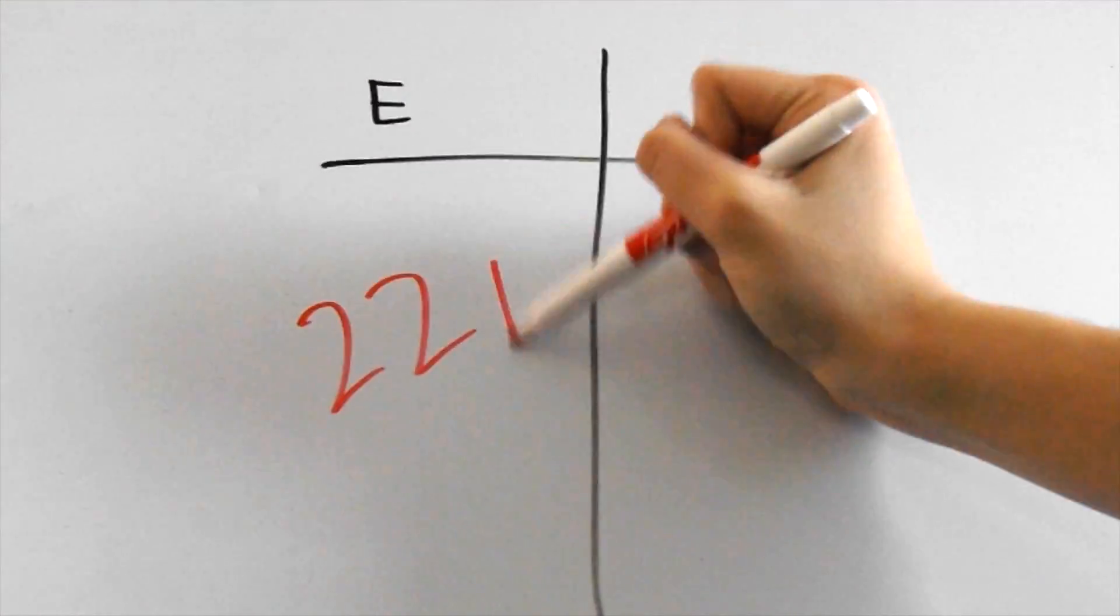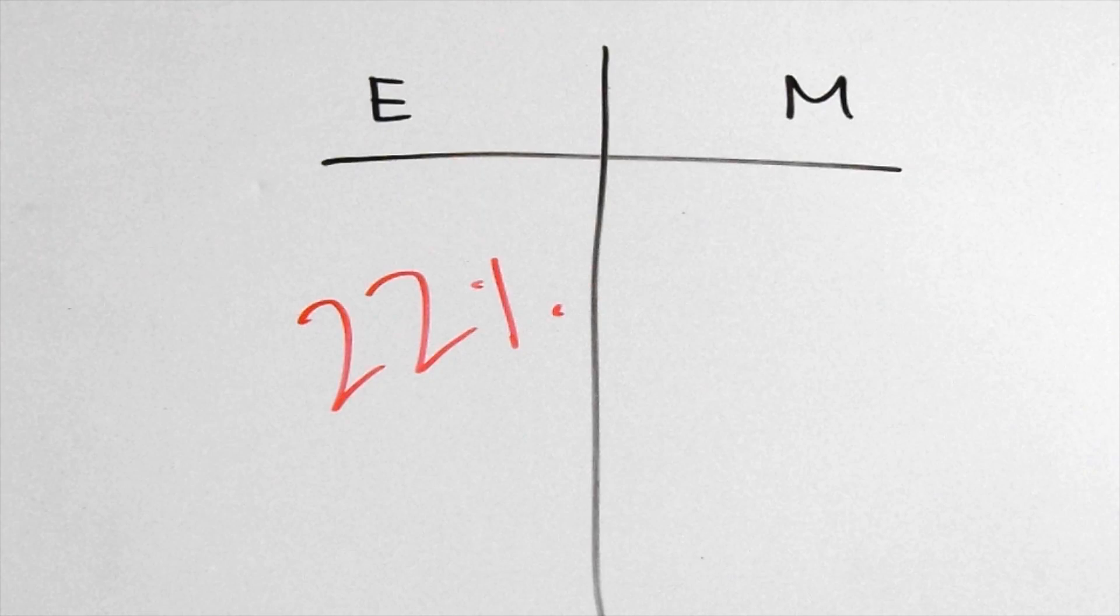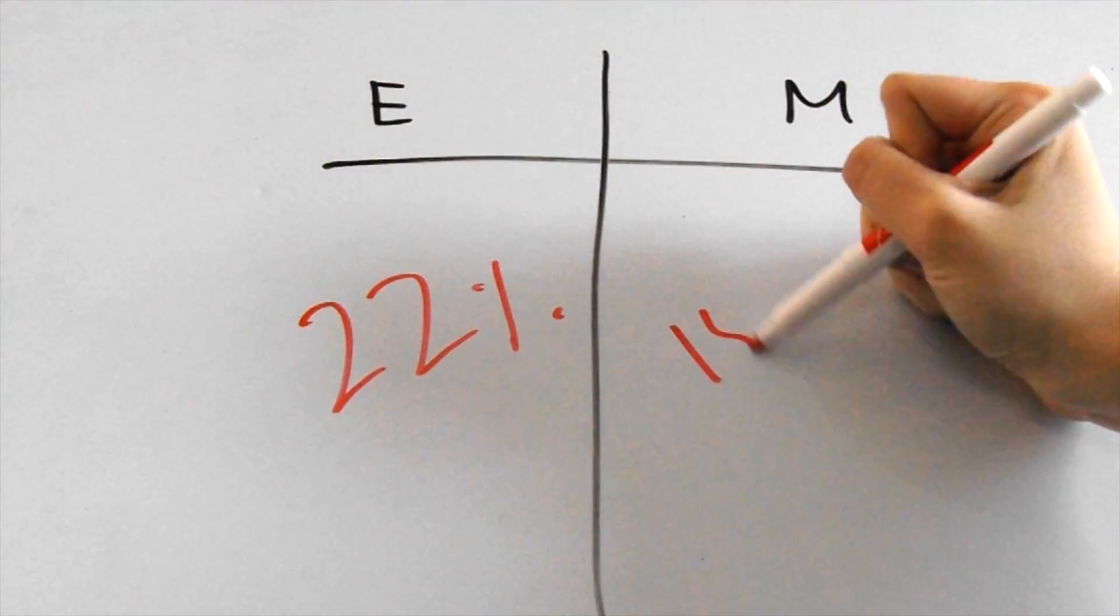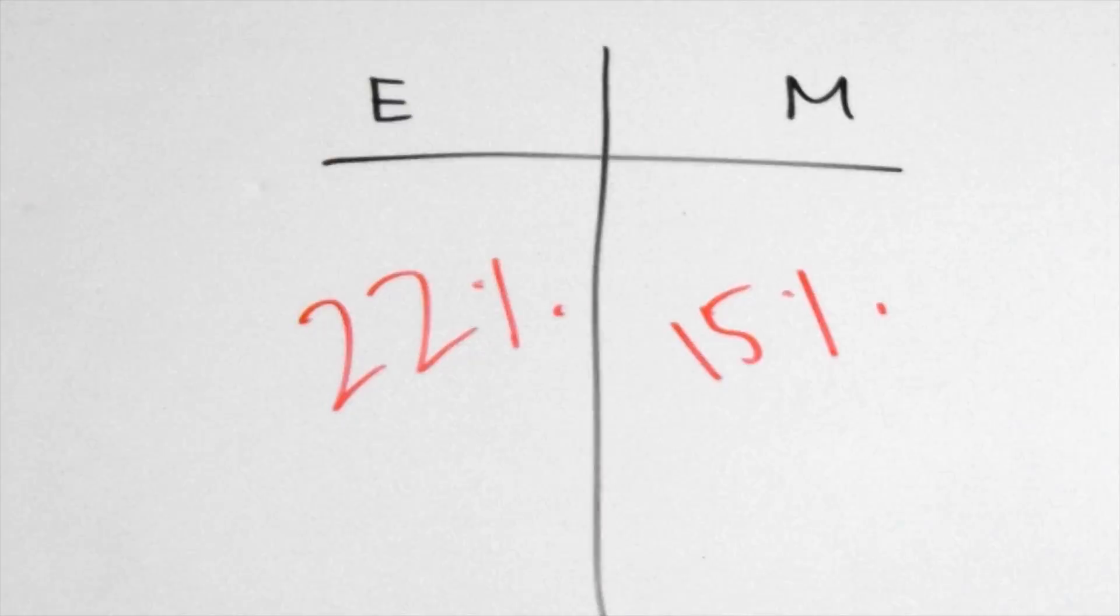For example, for the ecology test, about 22% of the exam is questions on evolution, while for the molecular test, only 15% is about evolution.